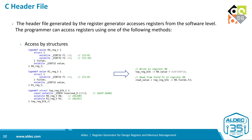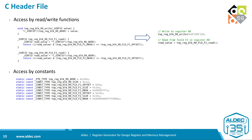The C header file allows access to registers from the software side. After including this file, the programmer can access the register block by one of three methods. The first is via structures — the header defines a top structure block with all registers and their fields, so we can write or read a whole register or directly into its fields. The second is via predefined read and write functions, also providing access to a whole register or its fields. The third is via predefined constants, allowing you to write custom macros using names instead of addresses, since addresses can change during development.